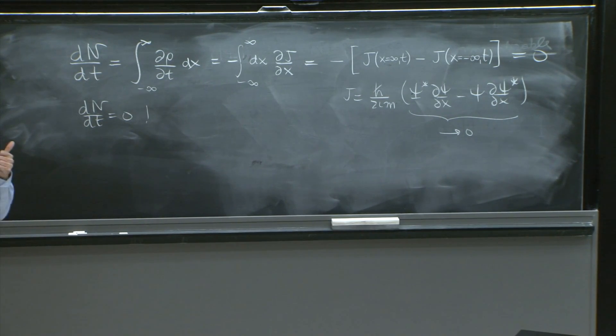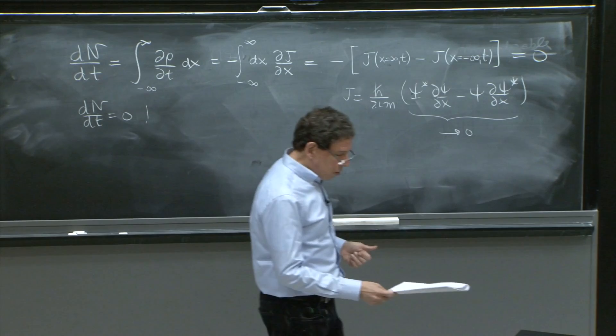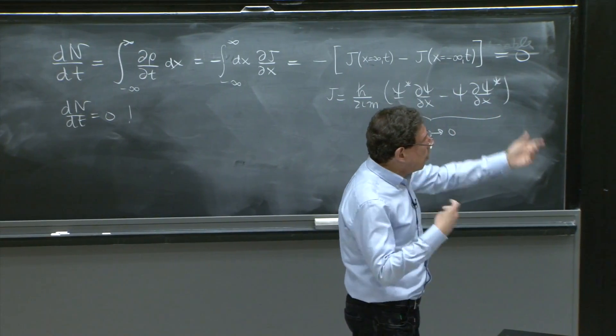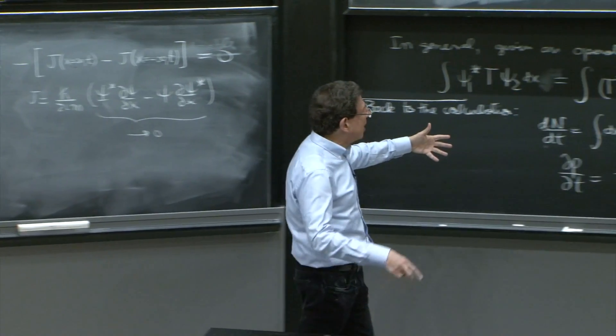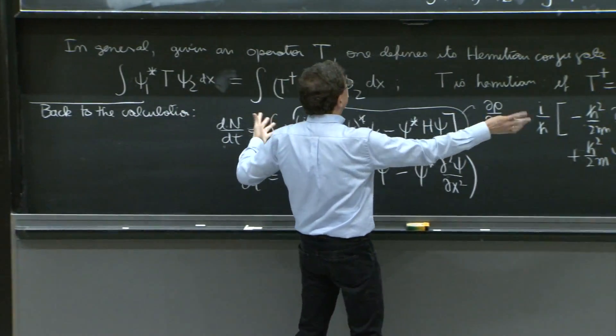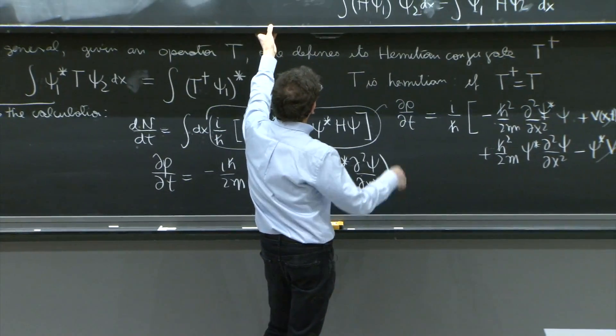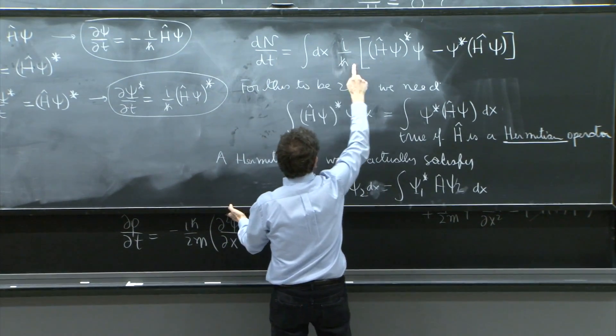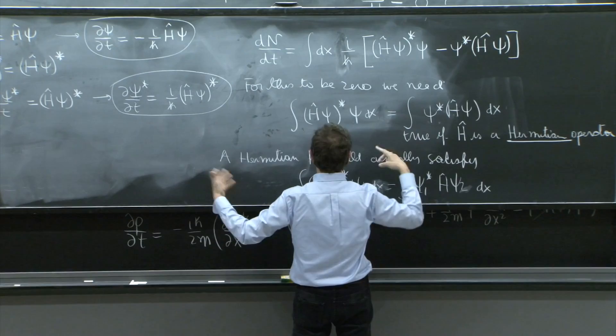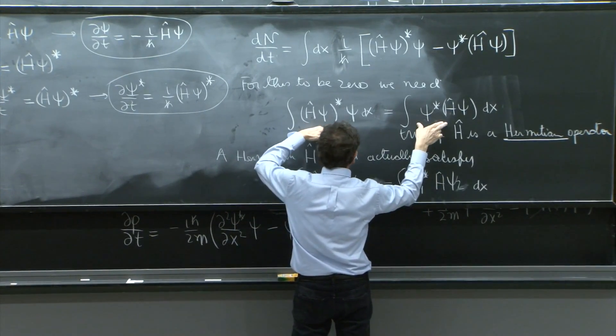And two things happened. And we, in the way of doing this, we realized that the computation we have done pretty much established that this is equal to that, because dn dt is the difference of these two integrals, and we showed it's 0. So this is true.